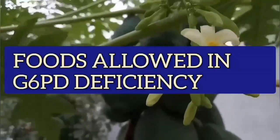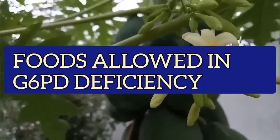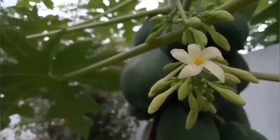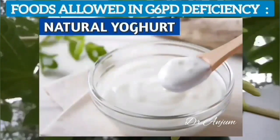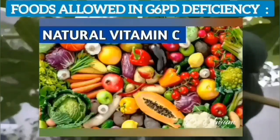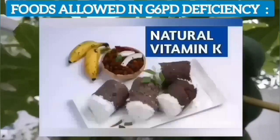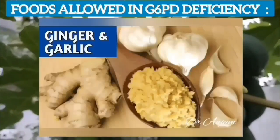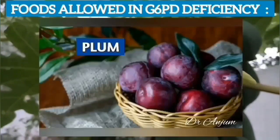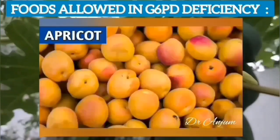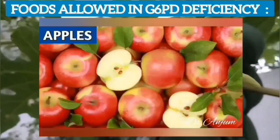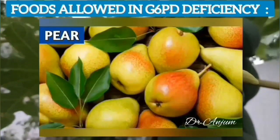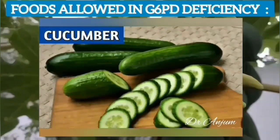Now here are the names and pictures of foods which are allowed in G6PD deficiency. Natural yogurt, natural vitamin C, natural vitamin K, pomegranate, ginger and garlic, plum, apricot, pear, and cucumber are all permitted.